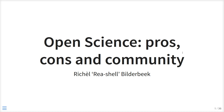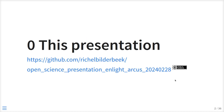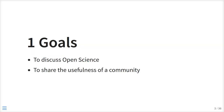Hi, my name is Rieschen Bilderbeek. I am going to talk about open science — some pros, some cons, and the community. This presentation can be found in multiple places and it is in the public domain, because I care more about open science than about getting personal glory from this presentation. The goal of this talk is to discuss open science and to share the usefulness of an open science community, and I'll try to convince you of that.